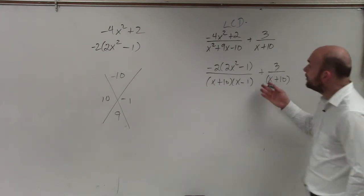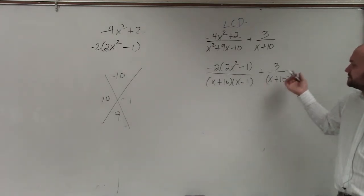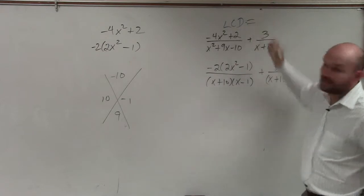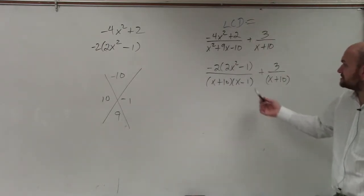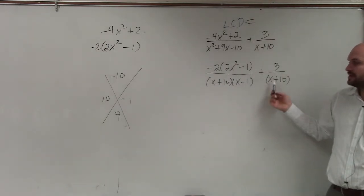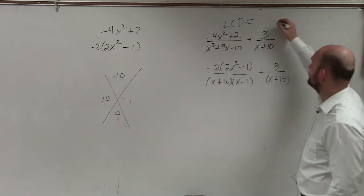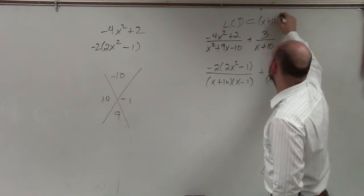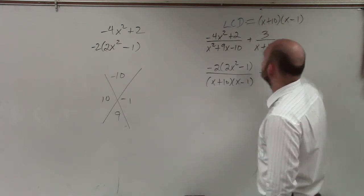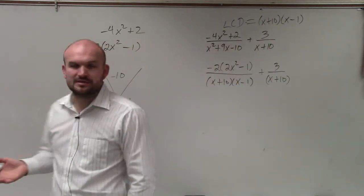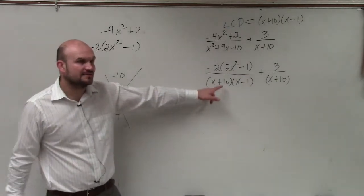OK. So now, basically all we're going to do is determine our LCD. Just like we had in the problem over there, you guys can see I have (x + 10)(x - 1) and here's (x + 10). So basically, our LCD is just going to be (x + 10)(x - 1). It's just the product of those two.